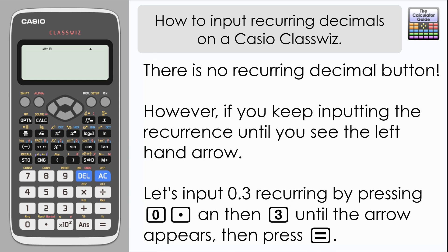There is no direct button to be able to do so, but I've got a tip: if you keep inputting the recurrence until you see a left-hand arrow, the calculator will recognize that as a recurring decimal and give the fraction equivalent.